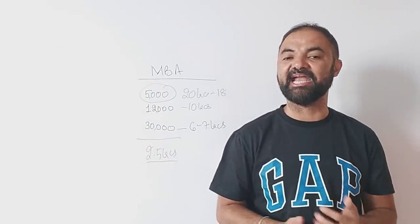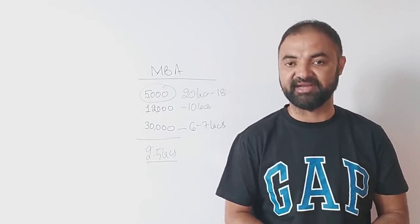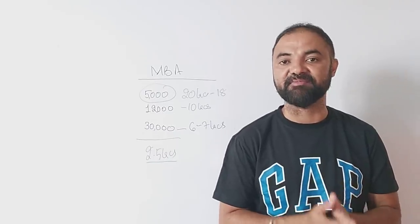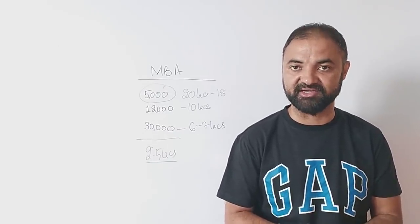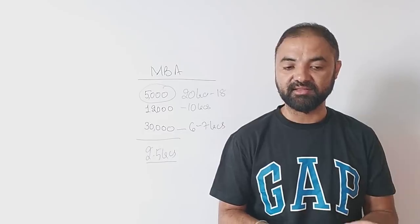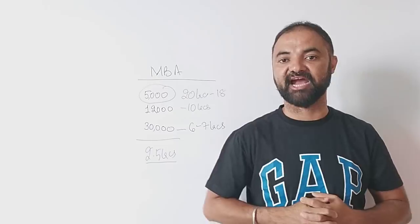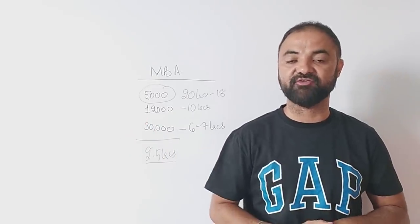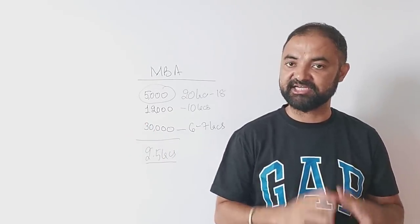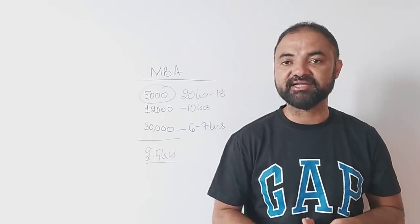Once you can get 98 to 99 percentile in the CAT paper - 99 percentile in CAT is only 150 marks out of 300, which is around 50 marks out of 100 - so to do 50 questions correct out of 100 in the CAT paper will get you an average package of 20 lakhs. And that should be your target.